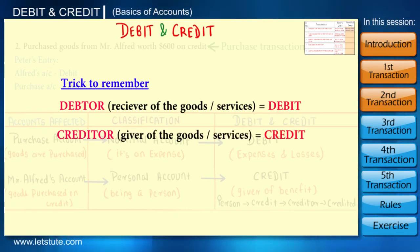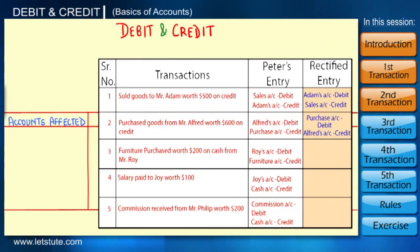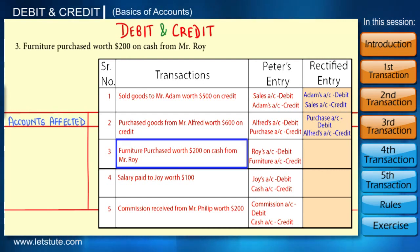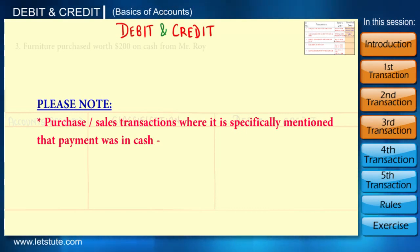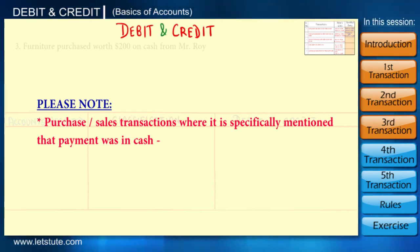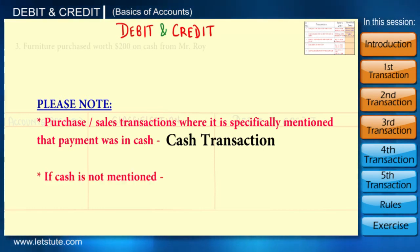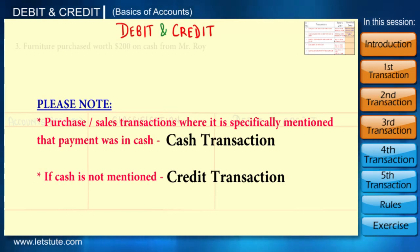Now let's move on to the next transaction. Note that only those purchase or sales transactions where it is specifically mentioned that payment was in cash are considered to be cash transactions. If cash is not mentioned, it is assumed to be a credit transaction, and so the debit or credit effect will be given to the party's name mentioned.